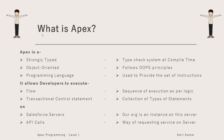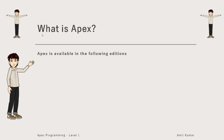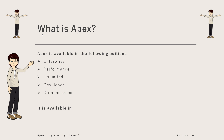So either we can execute statements on the server or we can request any service with the help of API calls. Hence, Apex is a strongly typed, object-oriented programming language which executes flow and transaction control statements on the Salesforce server and with API calls. Apex is available in the Enterprise, Performance, Comments, Unlimited, Developer, and Database.com editions.